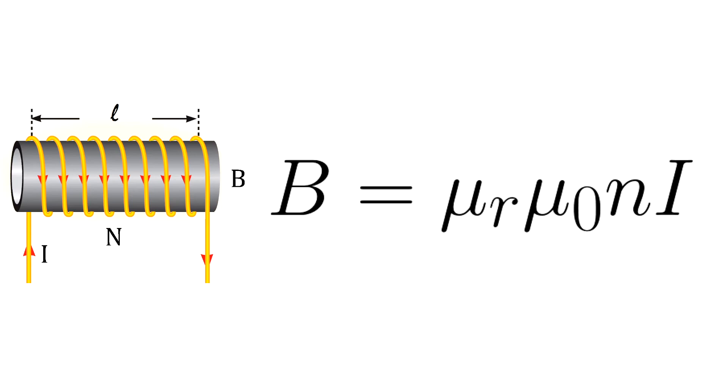If the solenoid is immersed in a material with relative permeability, then the field is increased by that amount. For example, if a coil of wire is wound around an iron core, then the magnetic field of a solenoid can be increased up to 200,000 times, because the maximum relative permeability of iron is 200,000.